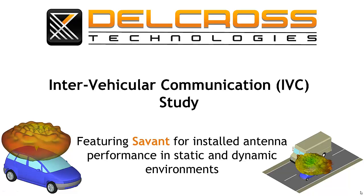This presentation is part two of our series on using the Dell Cross Savant electromagnetic software to study an inter-vehicular communication system. In the previous video, we used Savant to determine the best location to mount a 5.9GHz blade antenna on our automobile model. We determined that the optimal location to install our antenna was at the center of the top of the car.